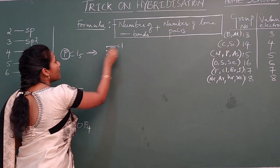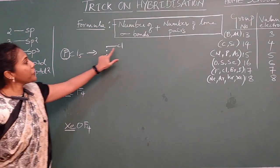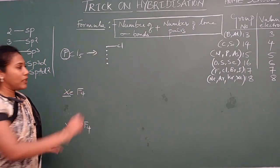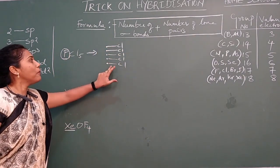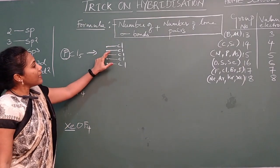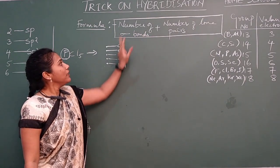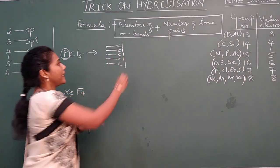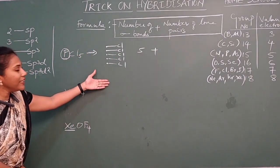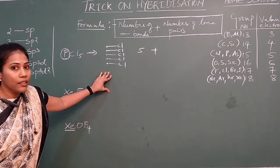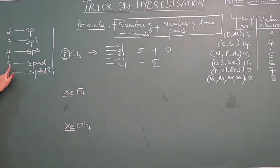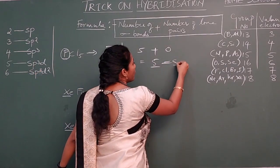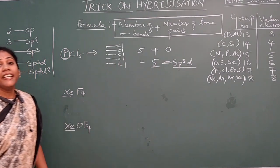Each of the 5 chlorine atoms makes 1 sigma bond using 1 valence electron, giving us 5 sigma bonds. Applying the trick: number of sigma bonds = 5, plus lone pairs = 0, gives 5. If you get the digit 5, the molecule has SP3D hybridization. So PCl5 has SP3D hybridization.